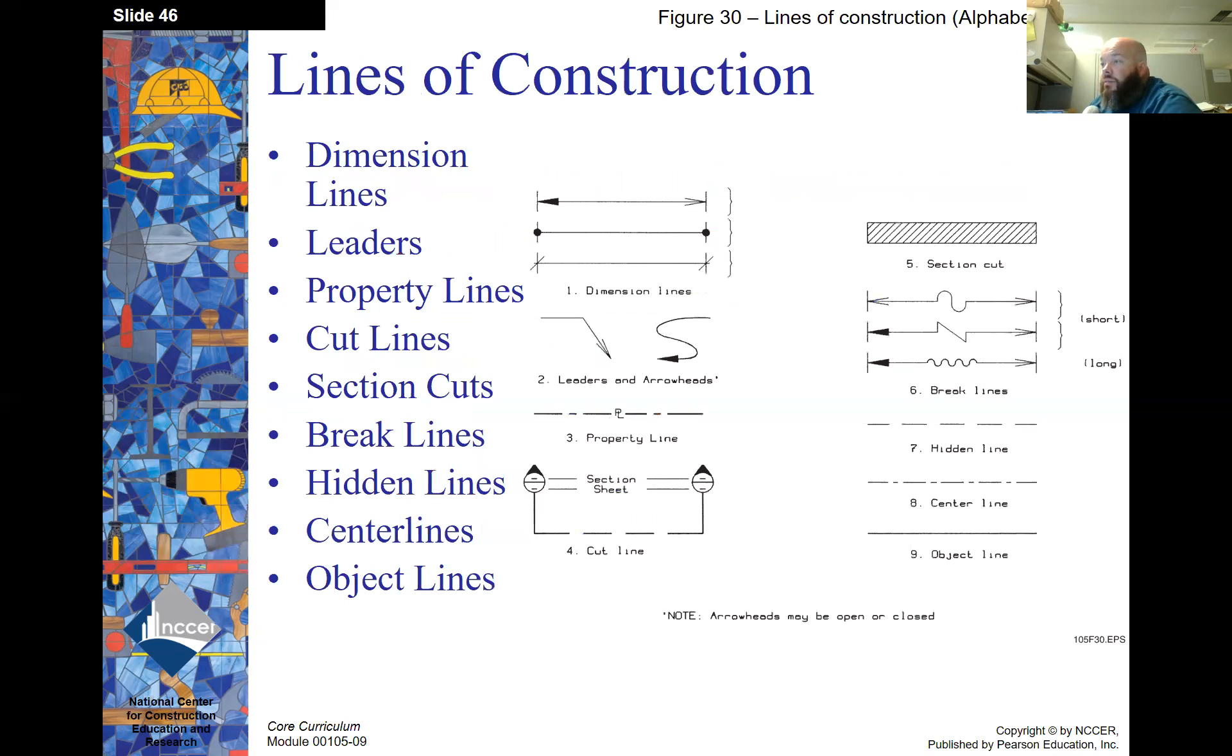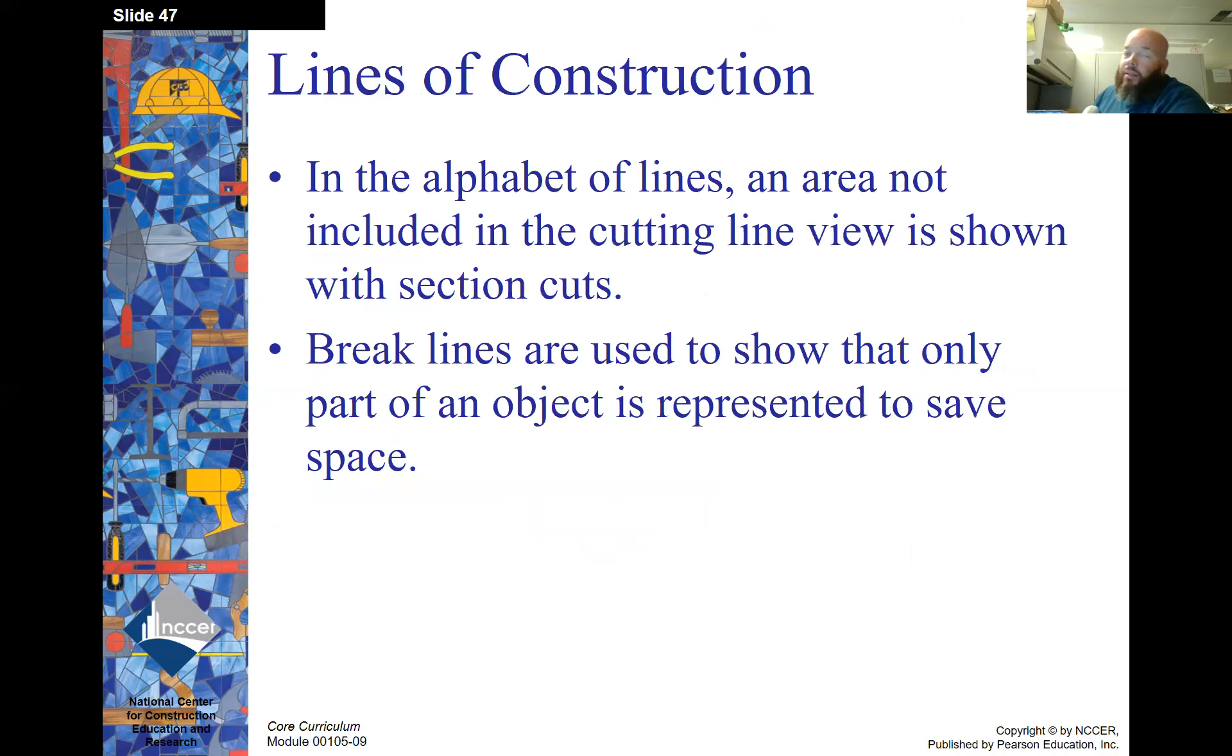Lines of construction. There's many different lines. There's dimensioning lines that are shown here. Leader lines, property lines, cut lines, section cuts, break lines, hidden lines, center lines, and object lines. Lines of construction in the alphabet of lines. An area not included in the cutting line view is shown with section cuts and break lines are used to show that only part of the drawing is represented to save space.